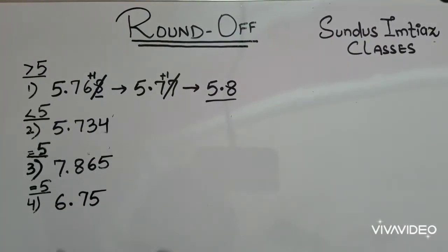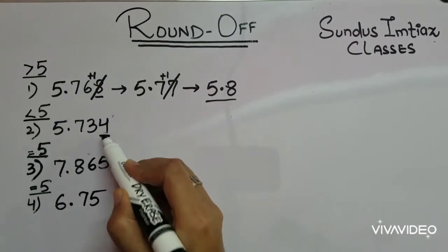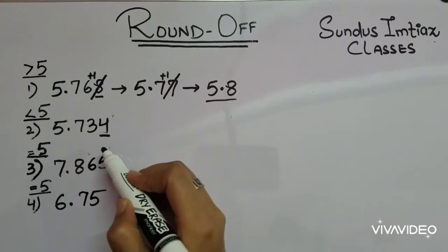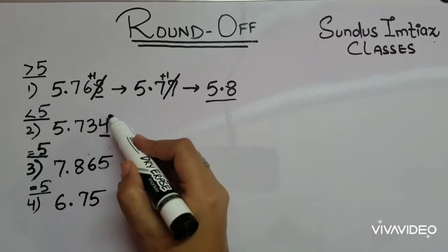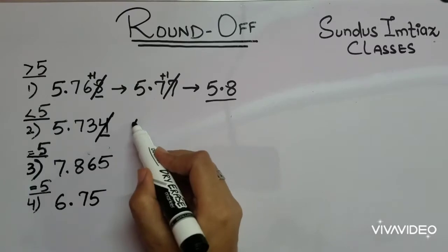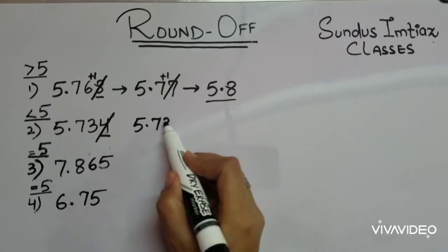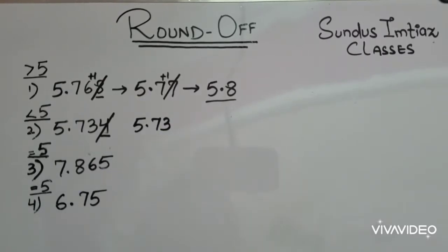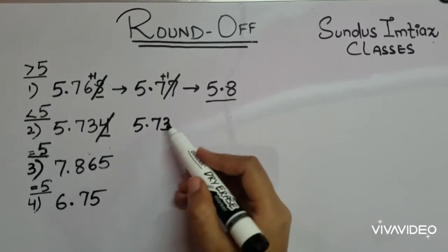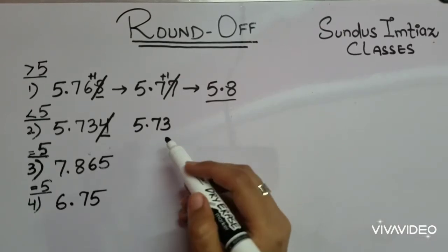Moving to the second one, we see 4 is less than 5. If it is less than 5, we simply drop it. Okay, 5.73. You can see 3 is also less than 5. So we drop this one and we get 5.7.